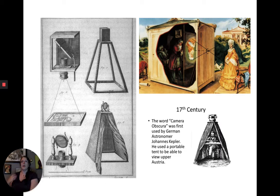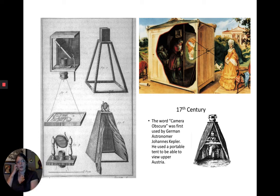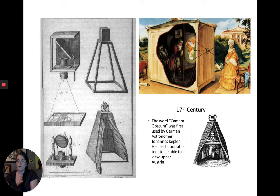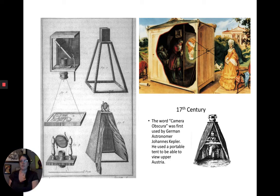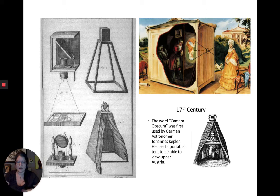The actual phrase 'camera obscura' was first written down by German astronomer Johannes Kepler. It's interesting to know where words come from, and he also left a small illustration explaining how he would set up his camera obscura.